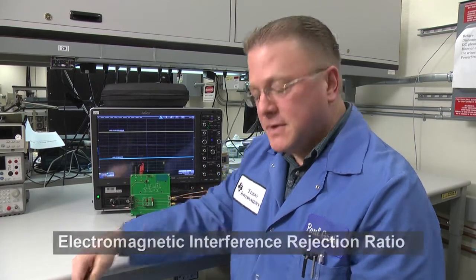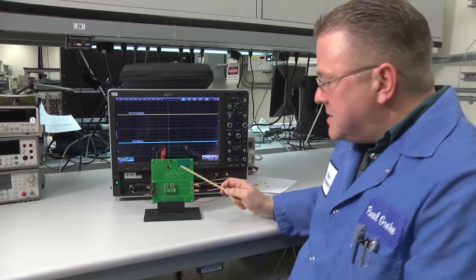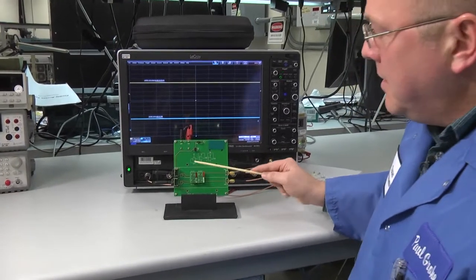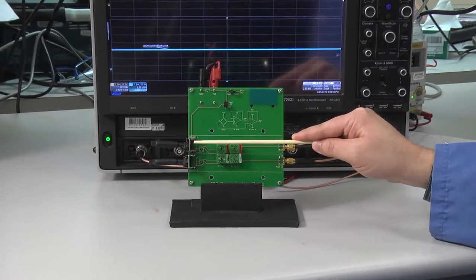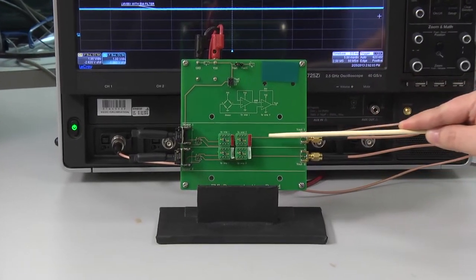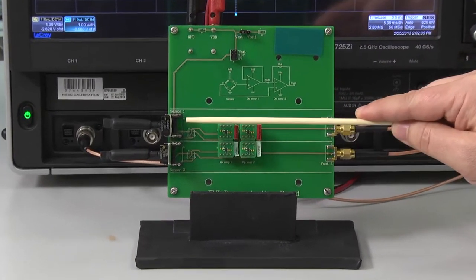So what I'd like to demonstrate today is the effects of the EMIRR on an op-amp. What I have here is a demonstration that has two pressure sensors that each has its own amplifier. So there's two identical channels here.